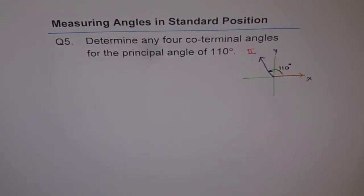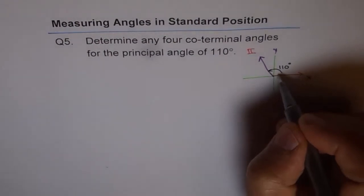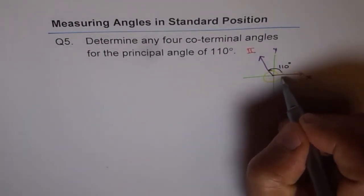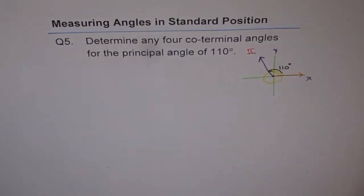One of the co-terminal angles could be, you can go like this and one round. Do you see that? So it is like 360 plus 110. Then again, you can go around like that and make another.